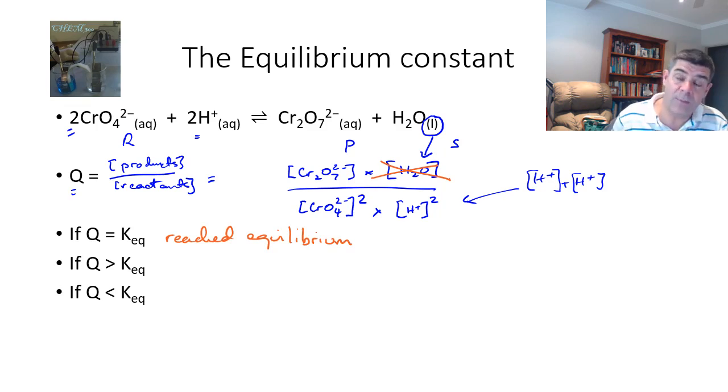If the reaction quotient is larger than the equilibrium constant then that means that the number on the top is large and therefore we need to drop that overall number in order to bring it down which means the products are going to reverse and we're going to favor the reactants so the reaction is going to move more quickly towards the left.